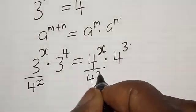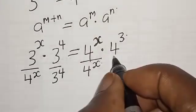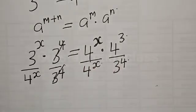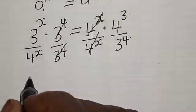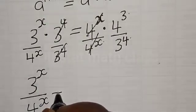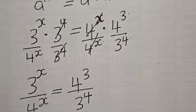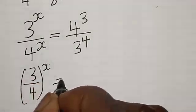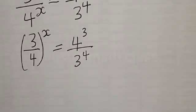Then let's divide both sides by 4 raised to power x, and also by 3 raised to power 4. This allows us to cancel terms, so we are left with 3 raised to power x divided by 4 raised to power x is equal to 4 raised to power 3 divided by 3 raised to power 4. That gives us 3 divided by 4, raised to power x, is equal to 4 raised to power 3 divided by 3 raised to power 4.